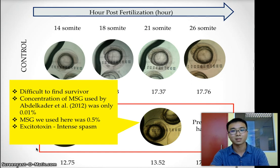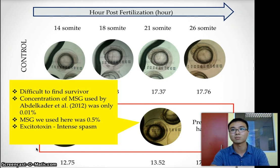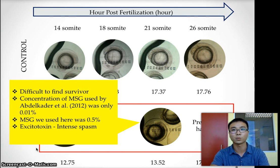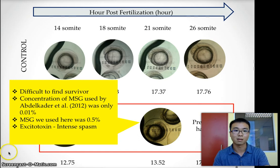MSG is an excitotoxin that damages nerve cells through excessive stimulation by neurotransmitters. This explains the intense spasm of the whole fish larvae, especially the long skeletal part. This may contribute to premature hatching of the fish embryo, as the spasm is quite intense and frequent and might break the chorion.